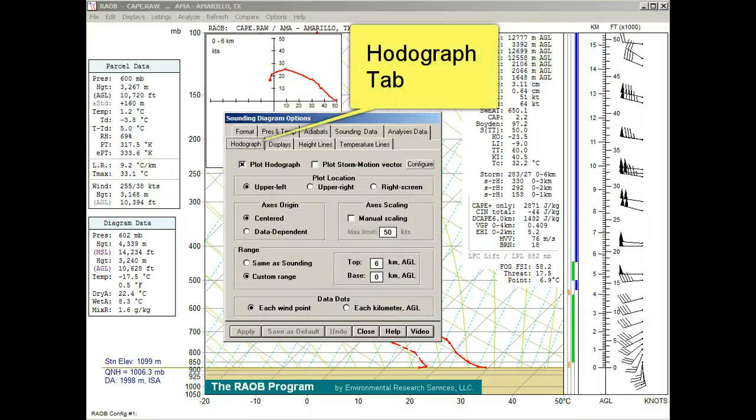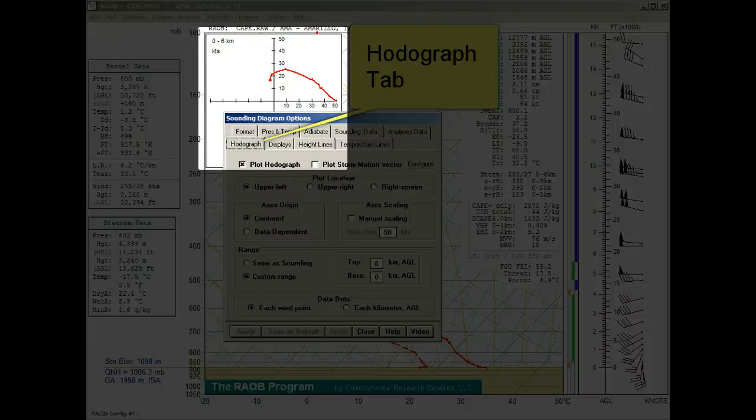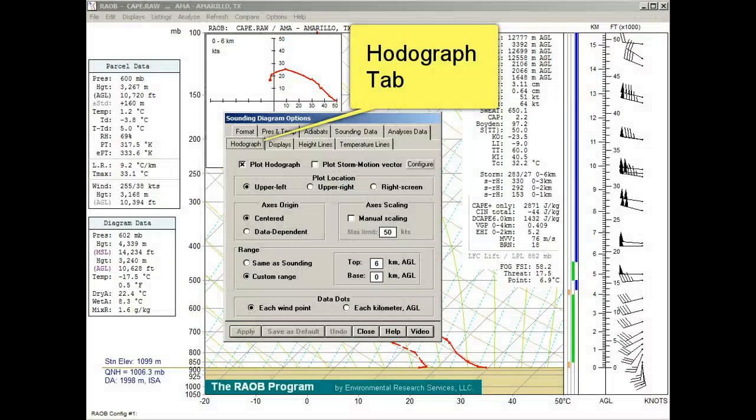The Hodograph Tab: this tab of options applies to the mini hodograph, which is inserted into the sounding diagram. The mini hodograph can be plotted in the upper left corner, or the upper right corner, or even the right screen location, which is only available if you are using a wide screen monitor.